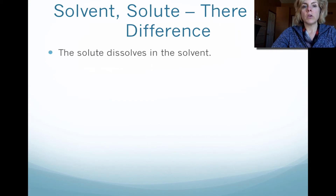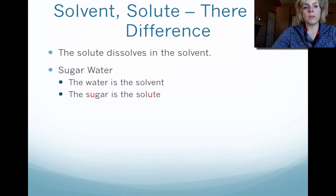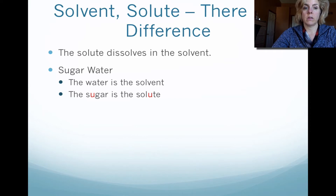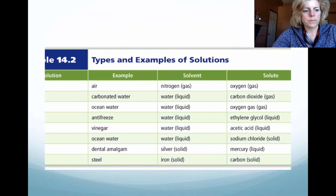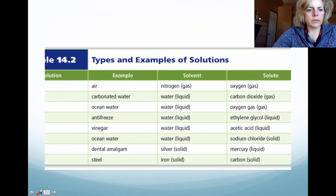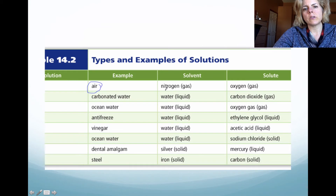Solute and solvent: the solute typically dissolves in the solvent. It's really important that you figure out which one is the solute and which one is the solvent. For instance, in sugar water, water is the solvent and sugar is the solute. In salt water, water is again the solvent and salt is the solute. Looking at this table of different kinds of solutions, notice that air is an example of a solution — the solvent is nitrogen, because it's a larger proportion, and oxygen is only the solute.